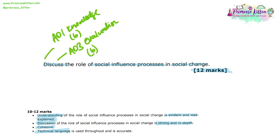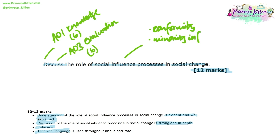Social influence processes could include conformity, minority influence, and obedience. For social change, we must think of some examples — these could be changes in law or changes in societal views and opinions.